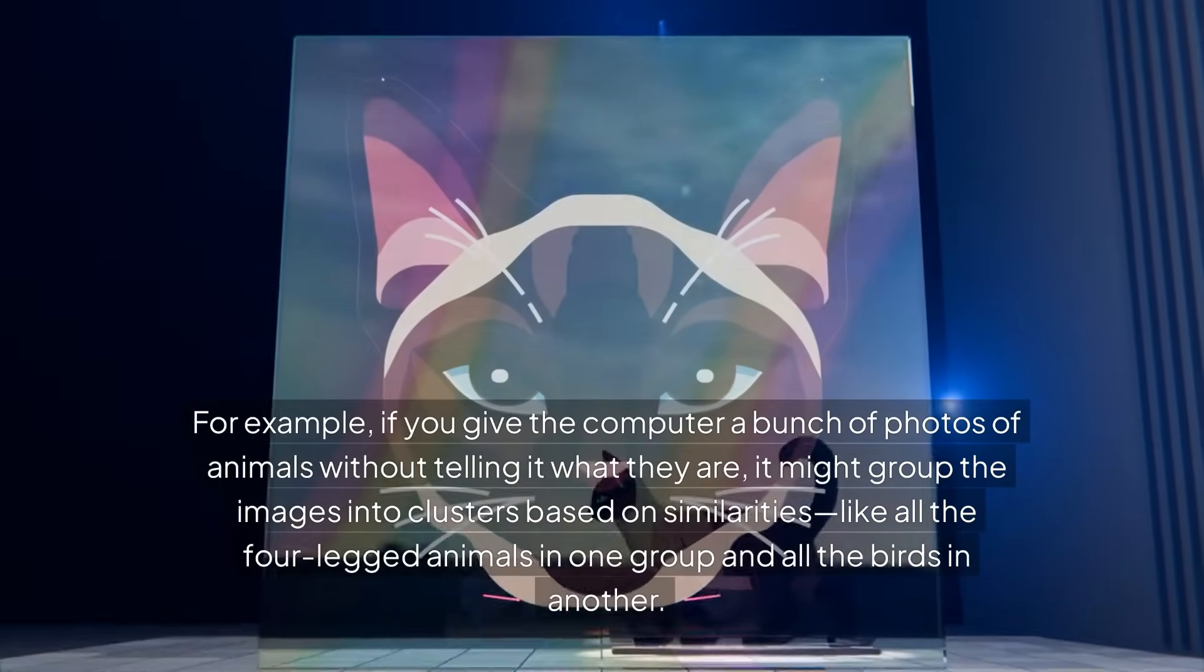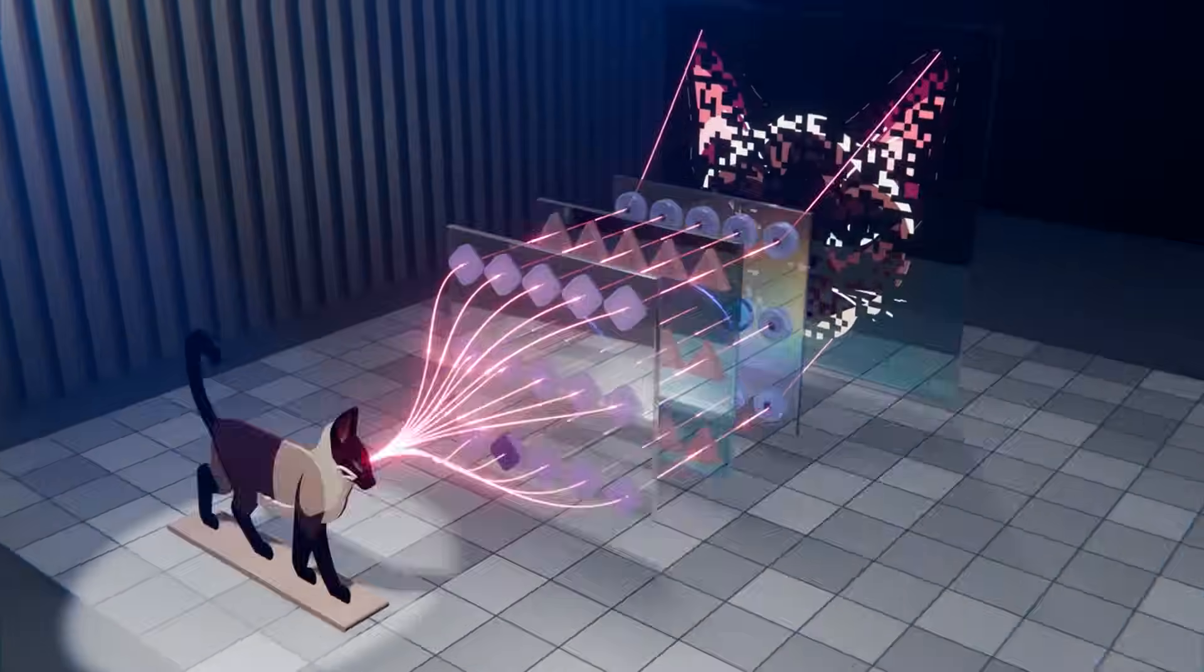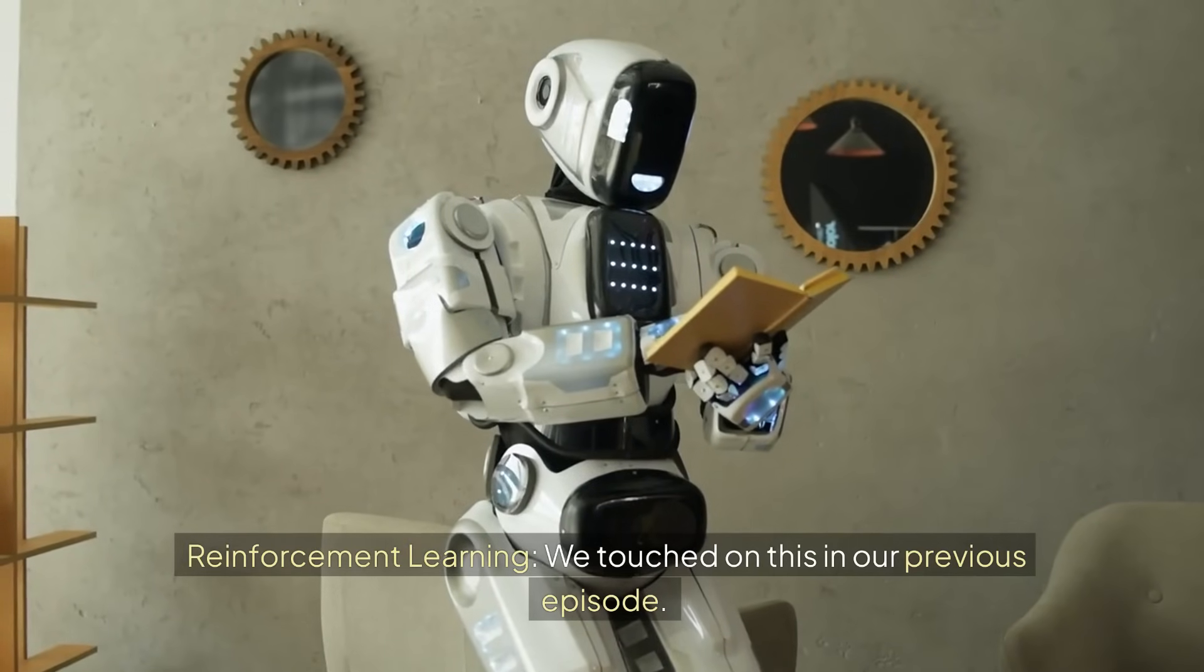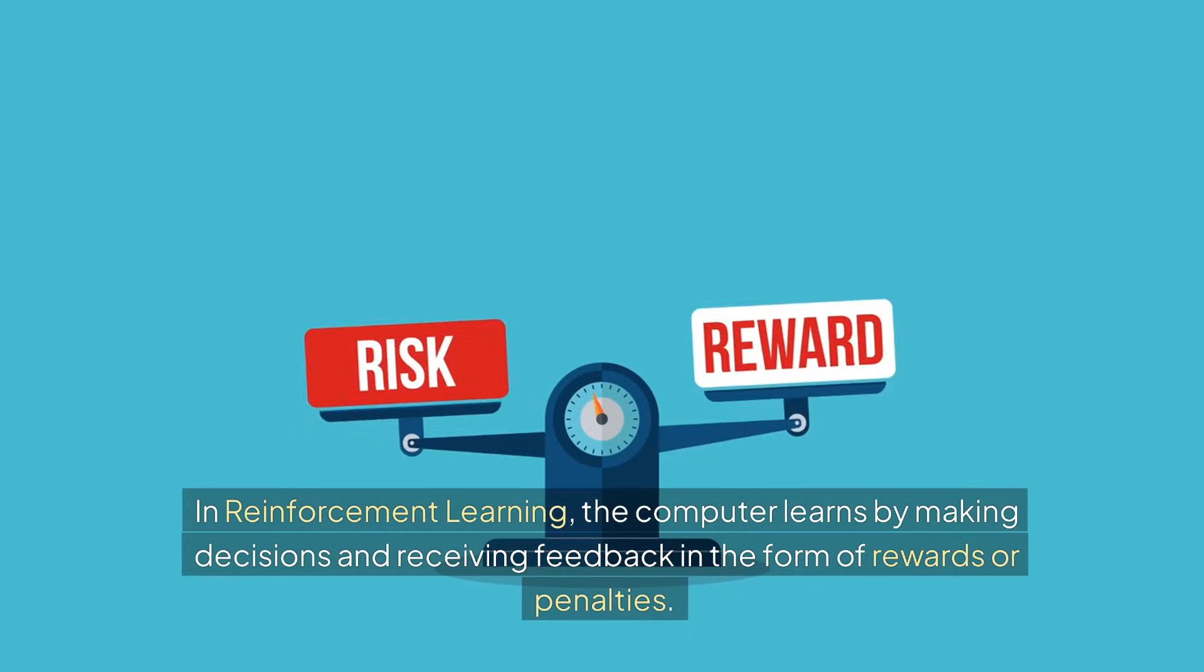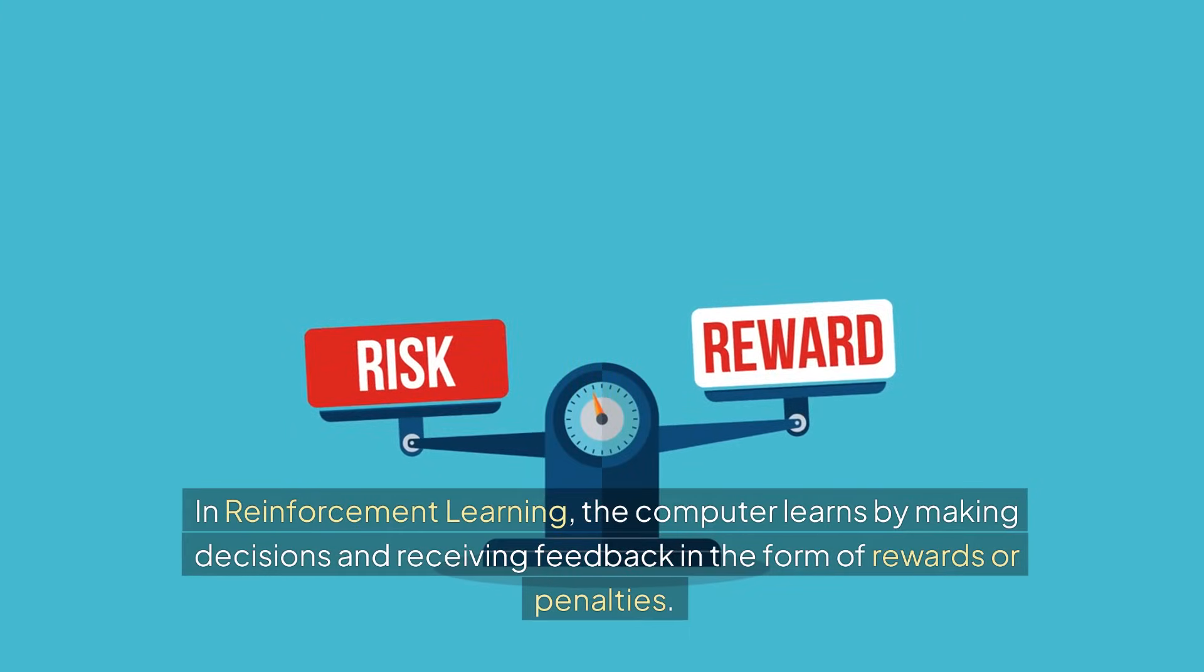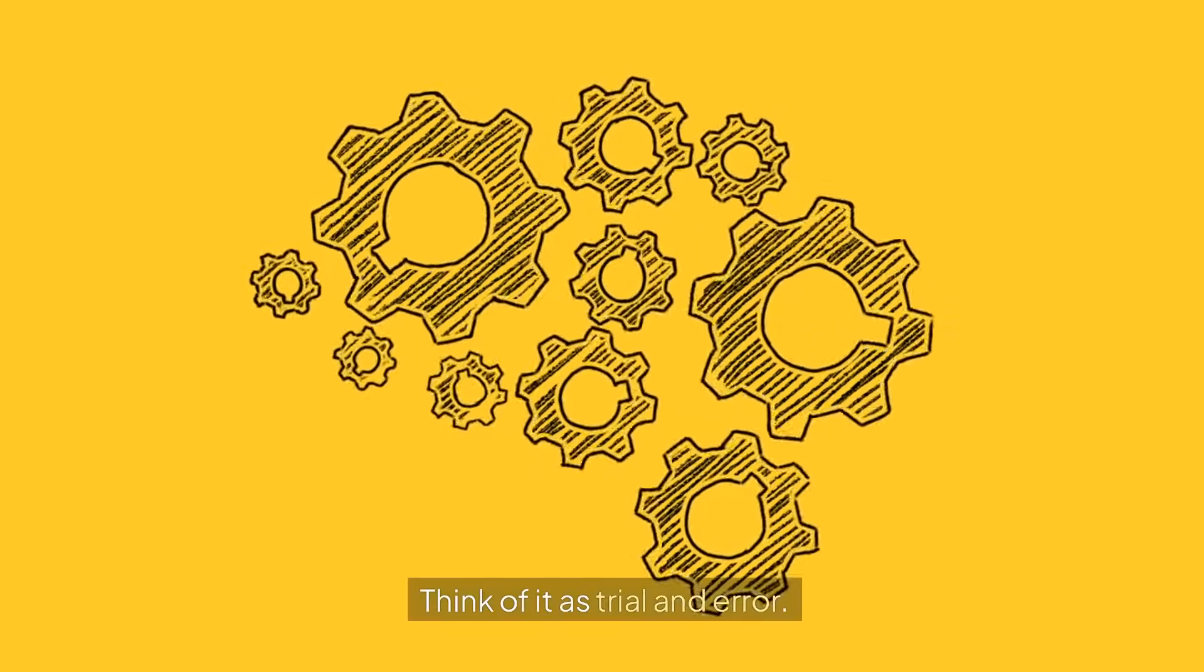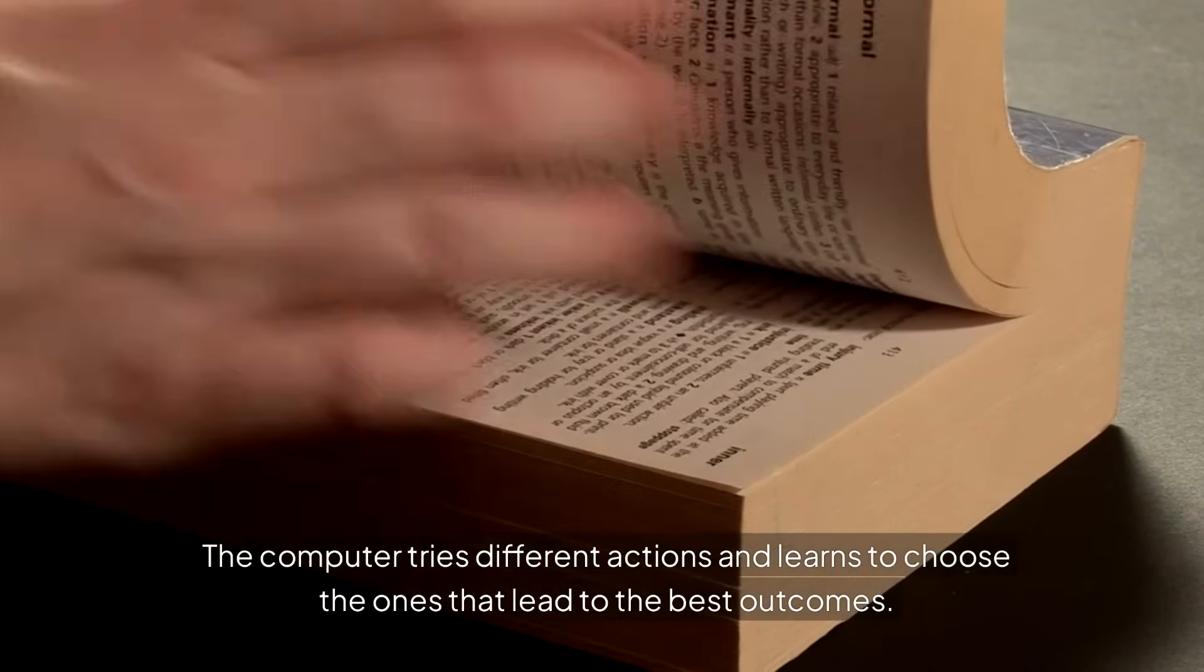Reinforcement learning: we touched on this in our previous episode. In reinforcement learning, the computer learns by making decisions and receiving feedback in the form of rewards or penalties. Think of it as trial and error. The computer tries different actions and learns to choose the ones that lead to the best outcomes.